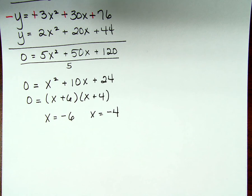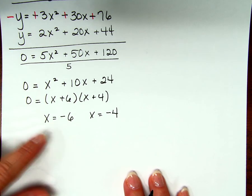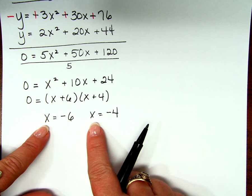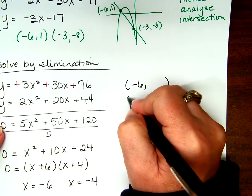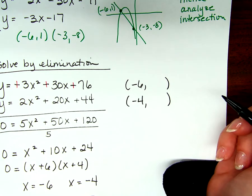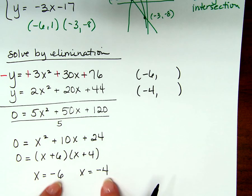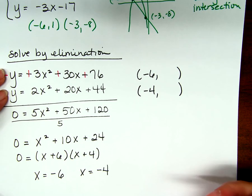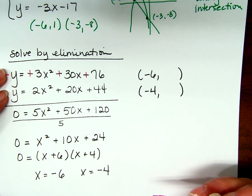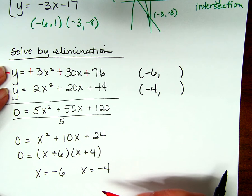What have I just figured out about my system? How many solutions are there? There are two — one looks like negative 6 something and one looks like negative 4 something, right? Because all we did was find the x coordinates. What do we have to do to find the y coordinates? I have to go back to the beginning. We're lucky because both equations are already solved for y — which one would you choose to plug these into? Probably the second one.